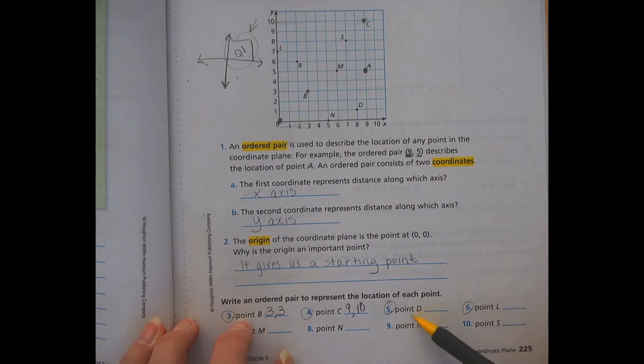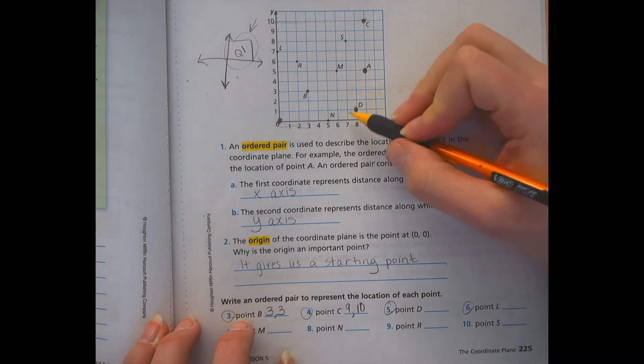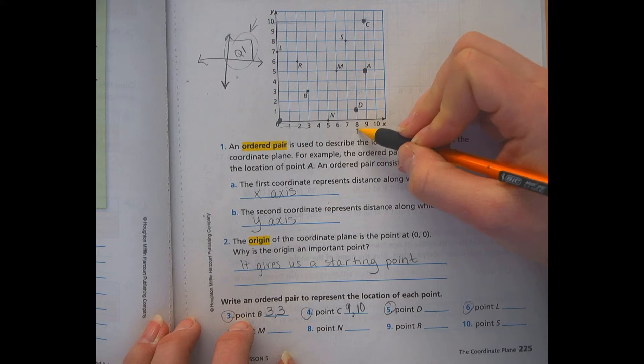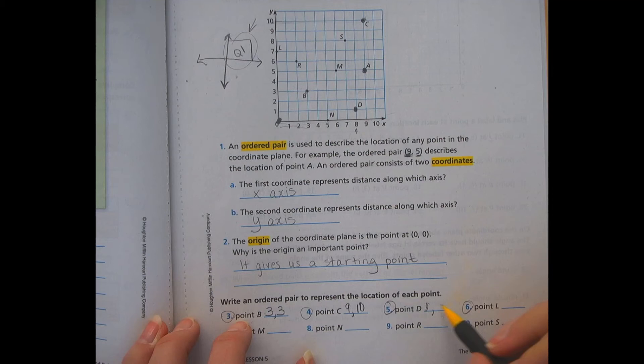Okay, so point D. Again, I got to start by finding it. So point D is right here. My first coordinate is my x-axis, which is eight. And then my y-axis is one. So my coordinates are (8, 1).